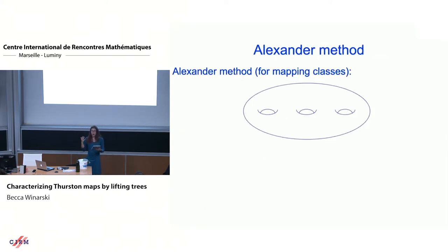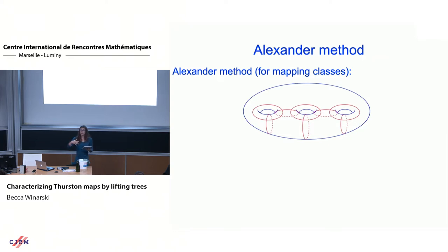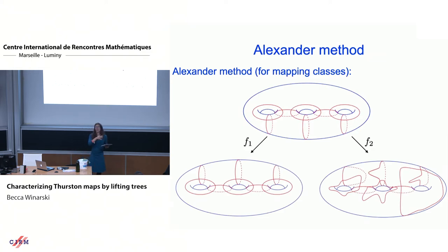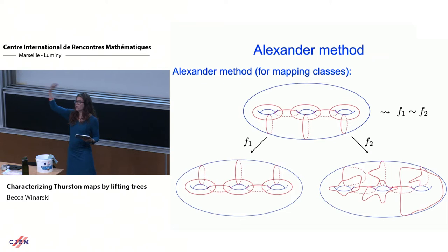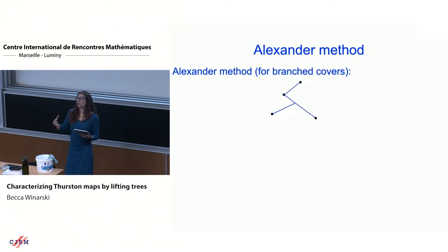The Alexander method for mapping classes says: if I have a surface and want to look at a homeomorphism, I can look at curves. If two homeomorphisms have isotopic images of a filling set of curves, the two maps themselves are isotopic. So we can reduce the isotopy problem of homeomorphisms to an isotopy problem of curves.